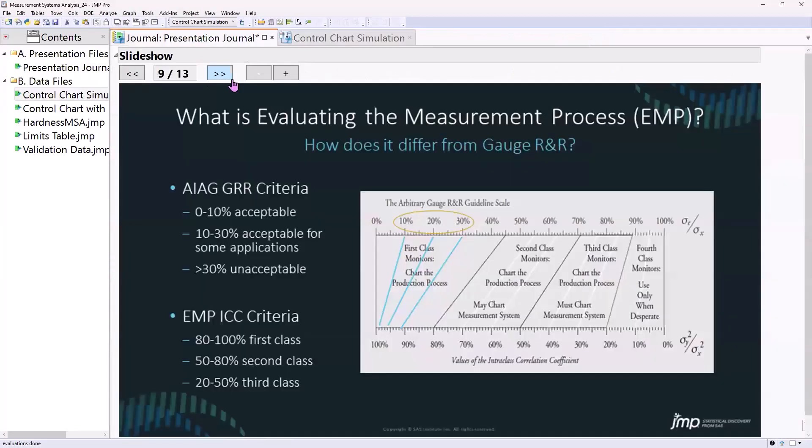It's easiest to describe EMP by comparing and contrasting it with the Automotive Industry Action Group gauge R&R criteria. If you've taken a class on quality, Six Sigma, or measurement systems analysis, you've probably heard the term percent R&R.